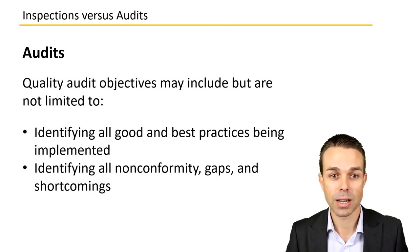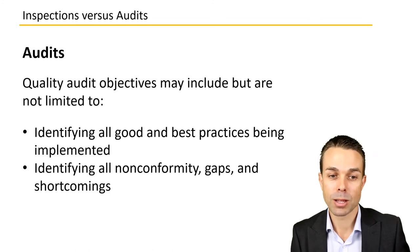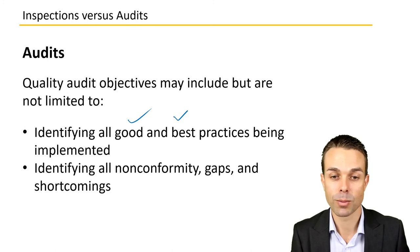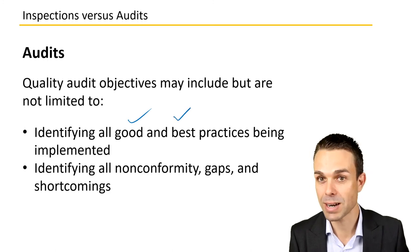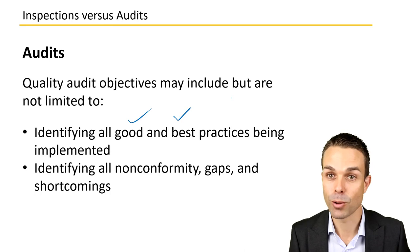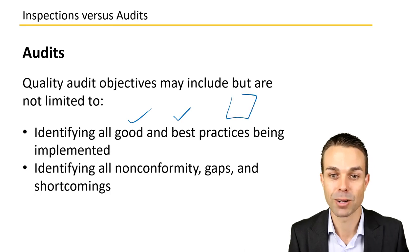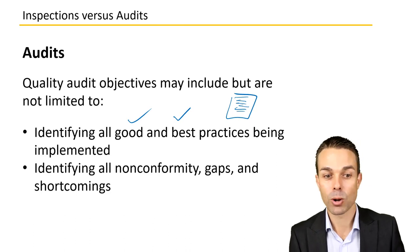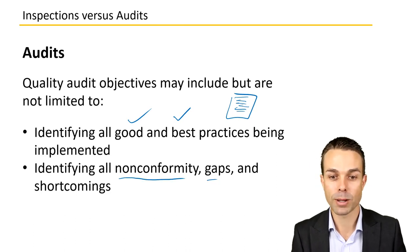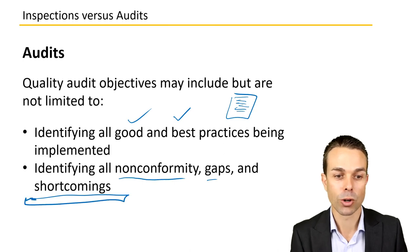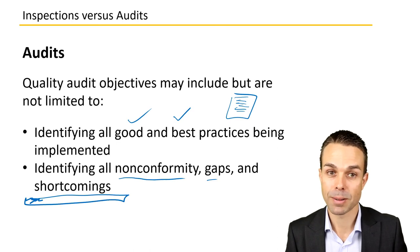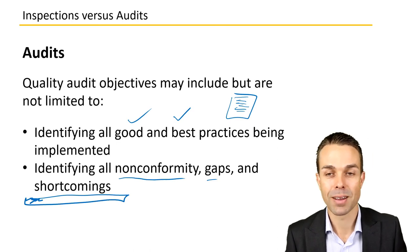Some examples — audit objectives may include, but are not limited to, identifying all the good and best practices being implemented. For example, they could recommend following the PMBOK Guide as one of the best practices in the industry. They are also identifying all non-conformity, gaps, or shortcomings — maybe there are gaps in the way we're delivering or gaps in the product we are delivering — and all those can be called out by auditors looking at how our project has been delivered.